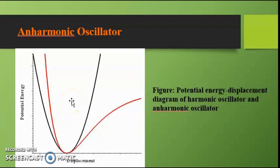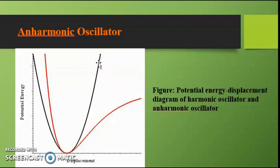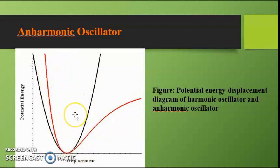In the next figure we have a comparison between the harmonic and anharmonic oscillator potential energy plotted against displacement. In the case of the harmonic oscillator, the plot is very symmetric about the axis and is almost U-shaped. In the case of the anharmonic oscillator, there is no symmetry about the same axis and it is slightly different from the U-shape.